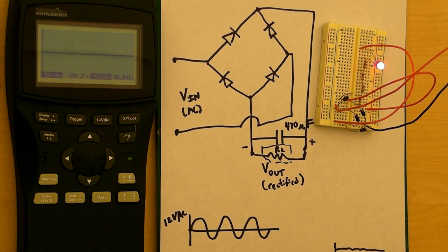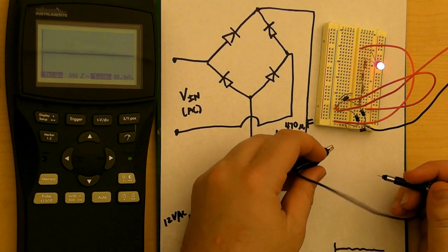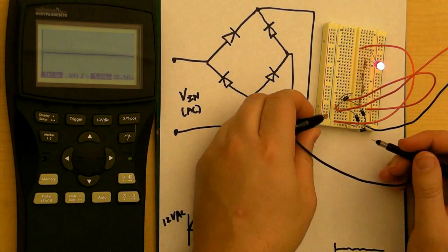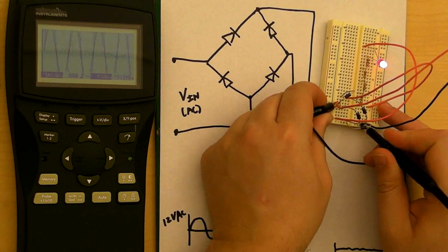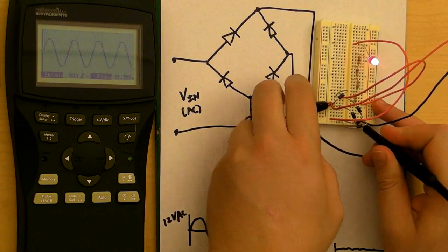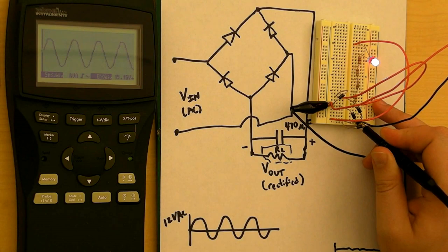I'll first show what it looks like on the input. Here is one input, here's another input. Polarity doesn't matter because it is an AC circuit. You can see I got a nice sine wave here. That's 12 volts coming in, actually a little bit more. The power supply is more like around 13 volts.